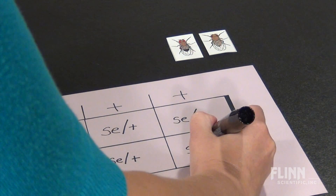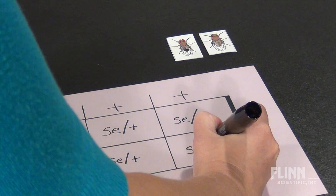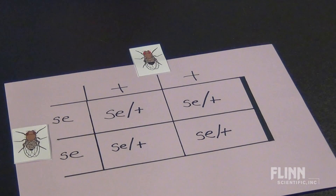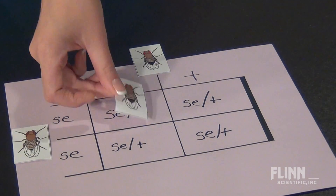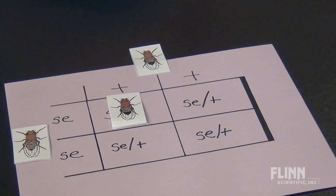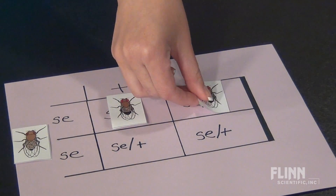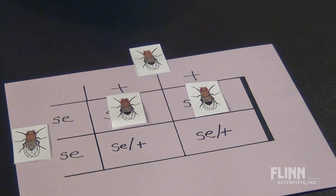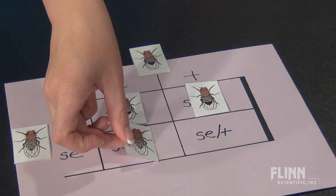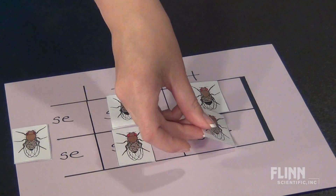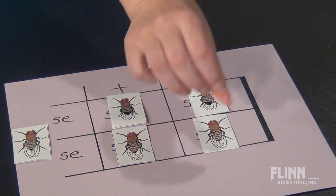Complete the genotypes in the Punnett square. Now place the cards with the correct phenotype on top of the genotype. Students are able to visually observe the results, which can be more powerful than just staring at letters. The next step is to simulate an F1 cross, and I'll leave that fun for you and your students.